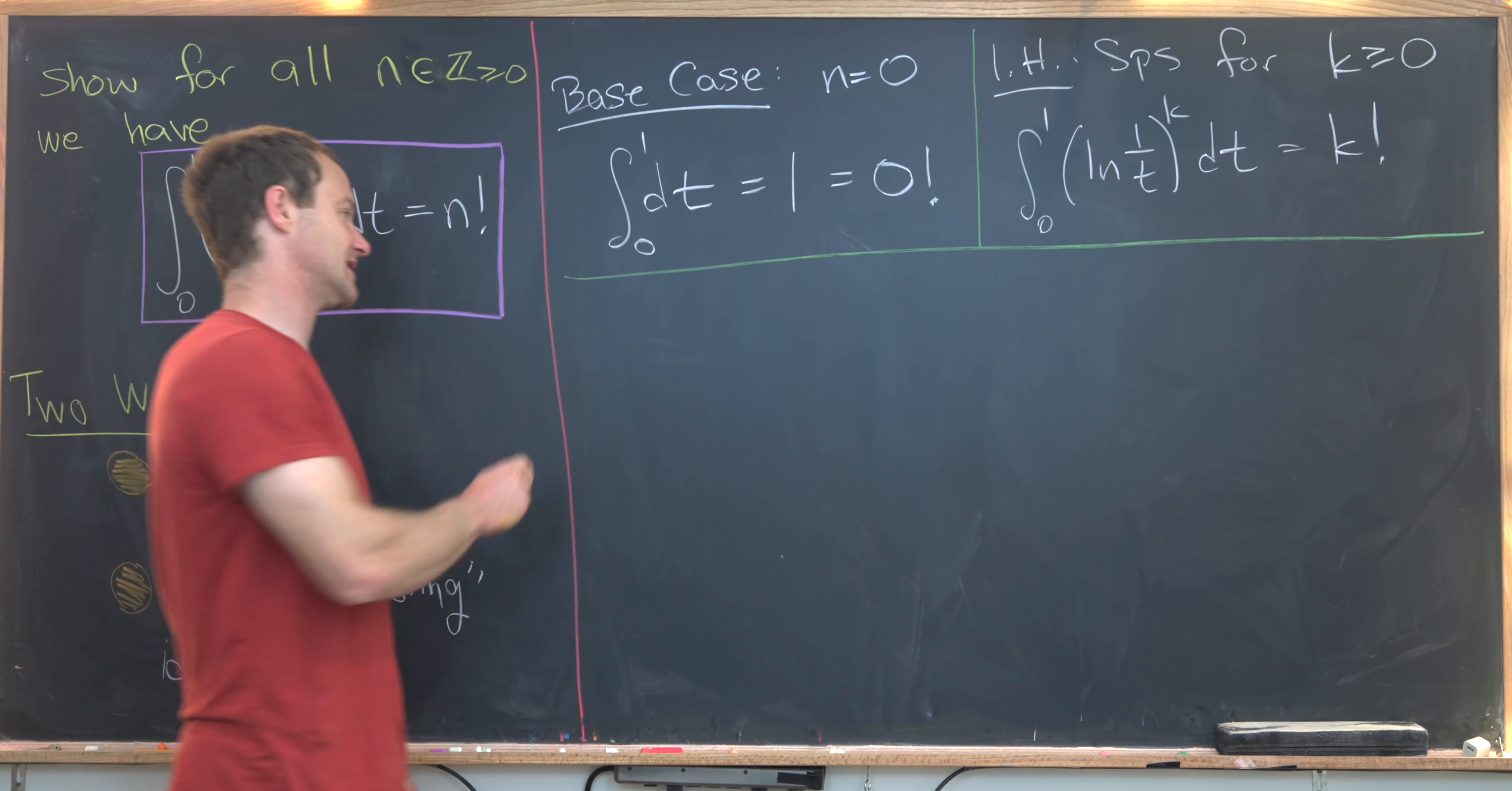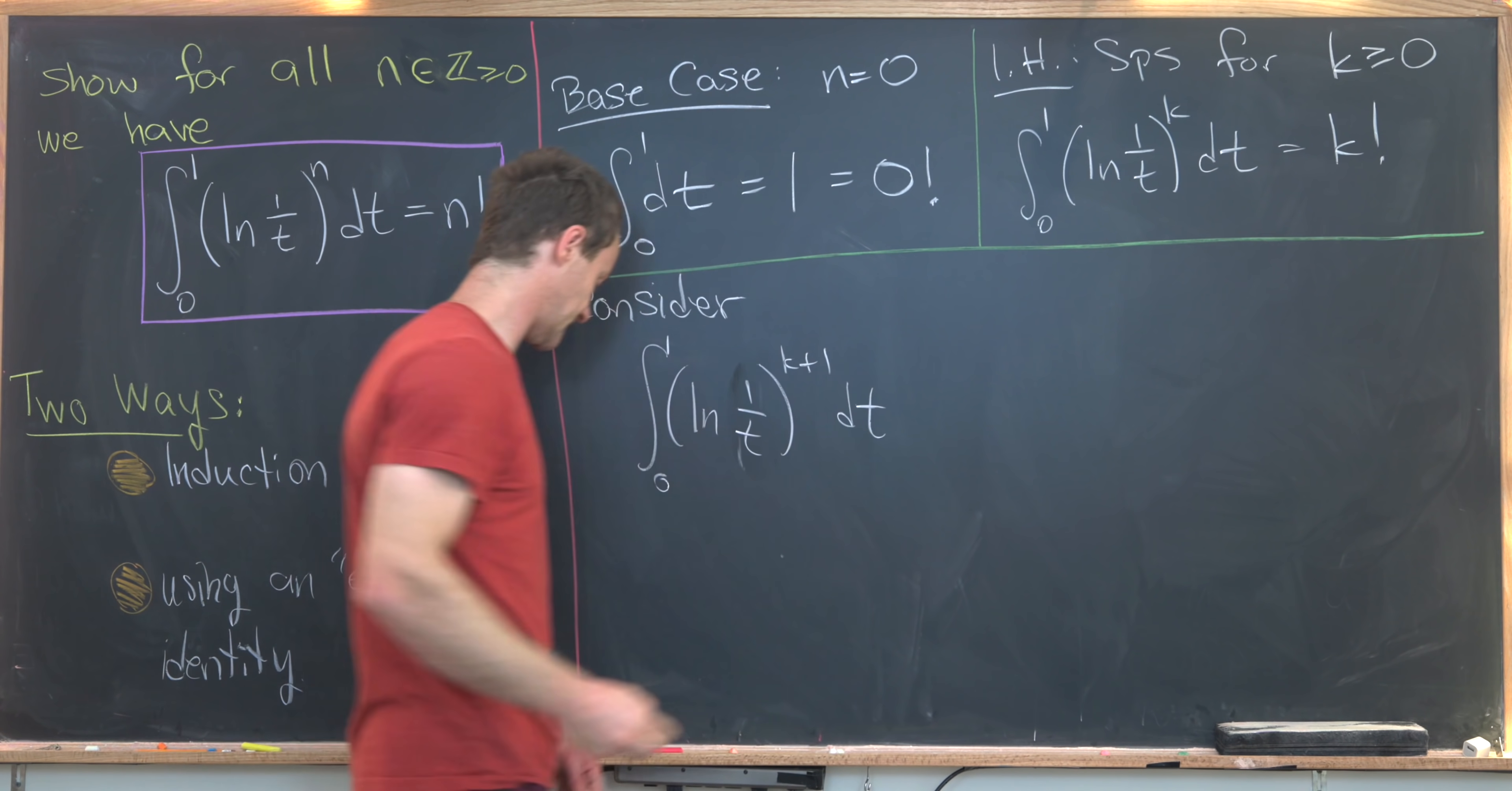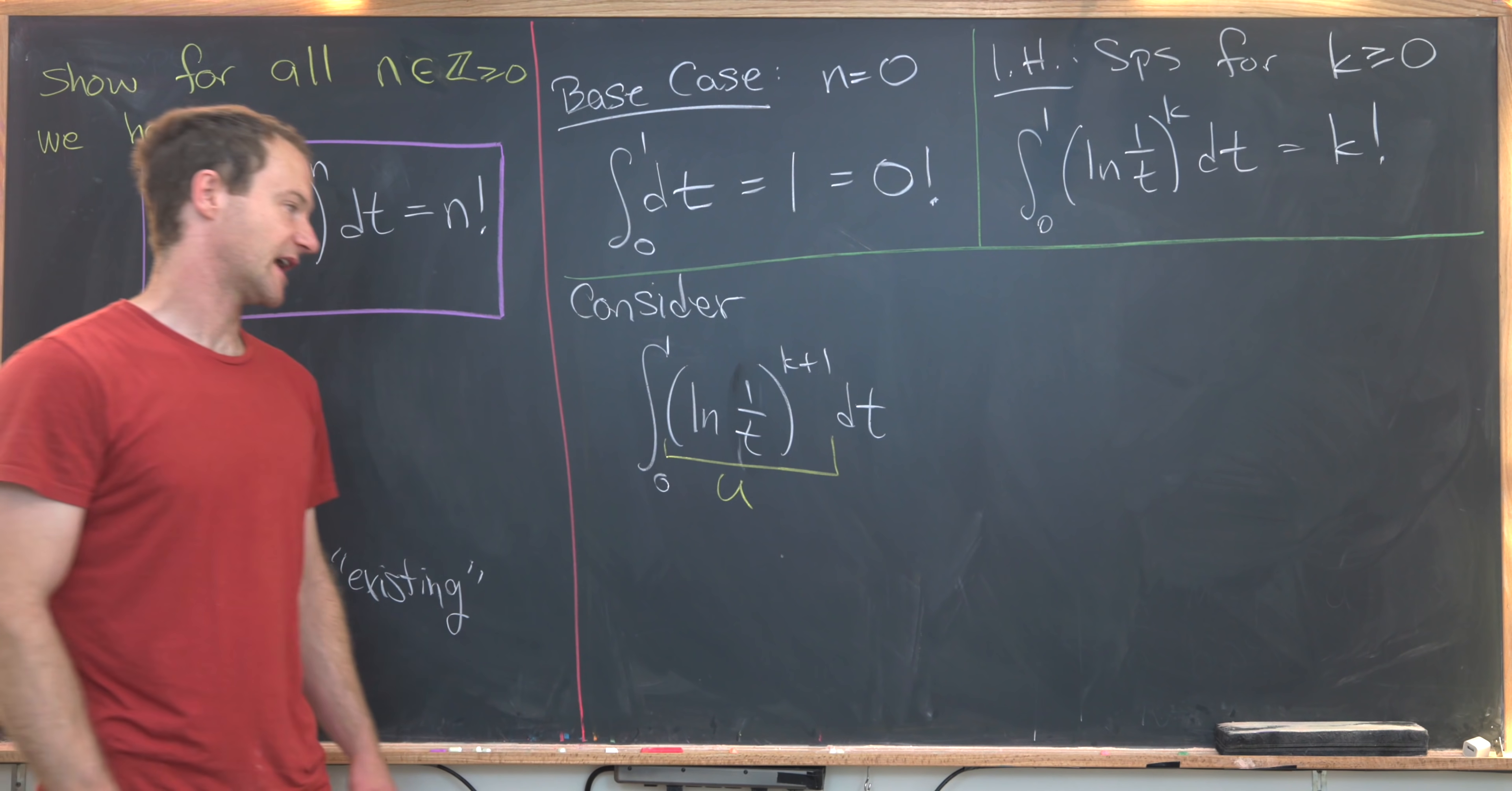Then we want to consider the next case, the k plus first case. So that'll be the integral from 0 to 1 of natural log of 1 over t, all to the k plus 1 dt. And we're going to attack this with integration by parts. There's some motivation that we should use integration by parts, because we have an integral of an inverse function, and often when you're integrating inverse functions, you use integration by parts. So here we're going to let u equal all of this stuff having to do with the natural log of 1 over t, including the exponent.